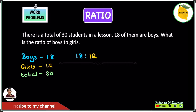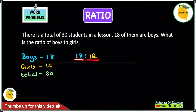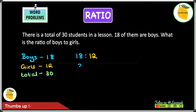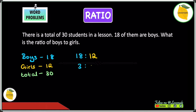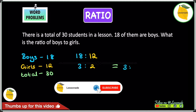Now we can simplify 18 to 12. To do that we need to find the highest common factor of both 18 and 12. If you want to know how to find the highest common factor, I've got a video on that — the link is in the description below. The highest common factor of 18 and 12 is 6, which means we divide both 18 and 12 by 6. 18 divided by 6 gives us 3, and 12 divided by 6 gives us 2, so our simplified ratio is 3 to 2.